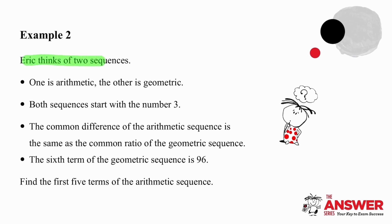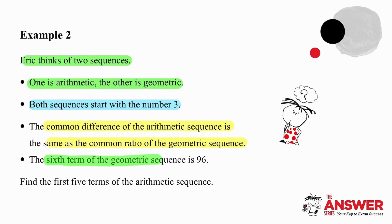In example 2, Eric thinks of two sequences — one arithmetic and the other geometric. Both sequences start with the number 3. The common difference of the arithmetic sequence is the same as the common ratio of the geometric sequence. In addition, we know that the sixth term of the geometric sequence is 96. What we need to do is find the first 5 terms of the arithmetic sequence.